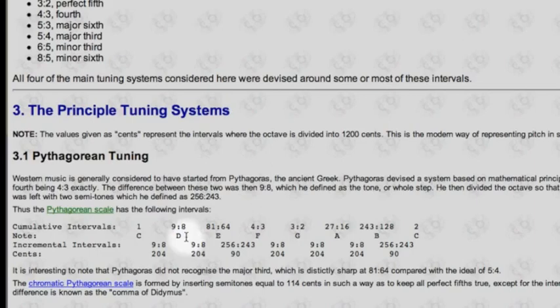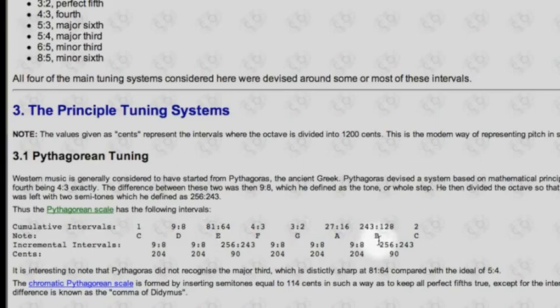A perfect fifth above the D gives us the A, which is a 27:16 ratio. A perfect fifth above the A gives us the E, which is an 81:64 ratio partial. And then the B is a 243:128 ratio partial.